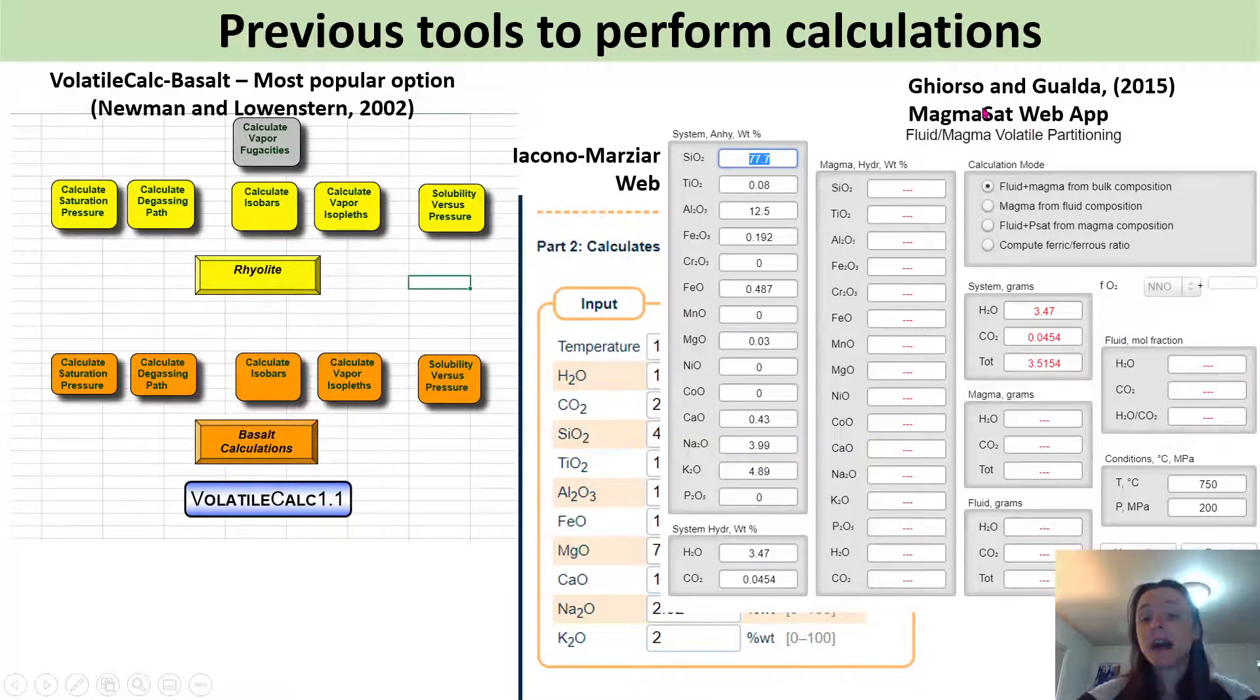Finally Magnusap, this is available as a web app or as a Mac app and what you can see is again you hand type in your major element contents, your volatiles and then you would scroll over to here to read your saturation pressure.